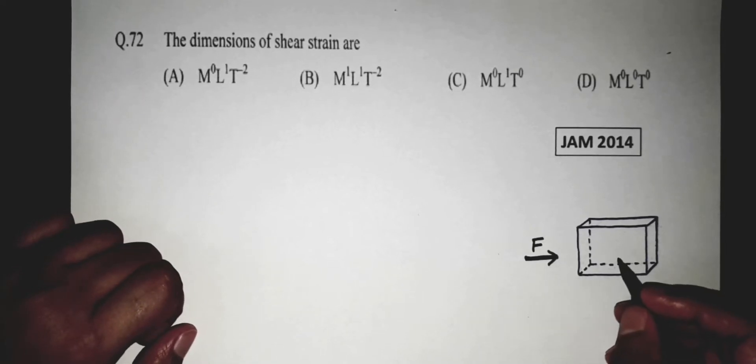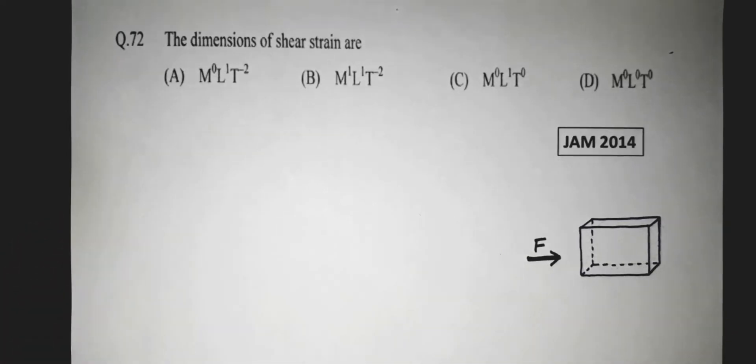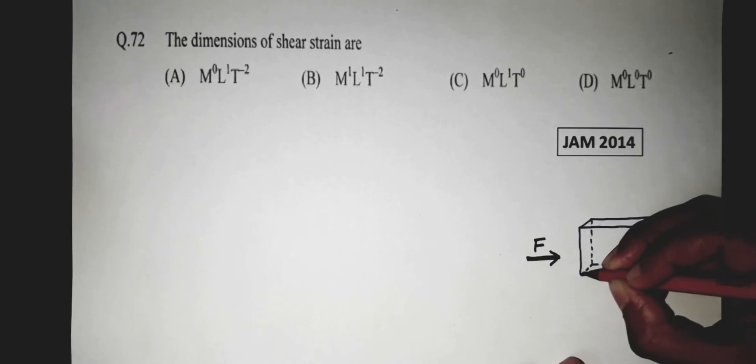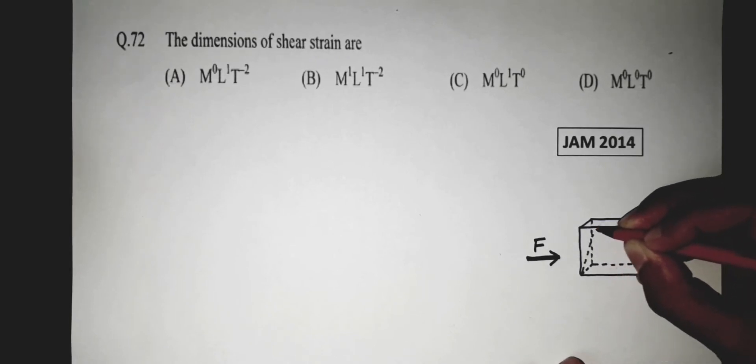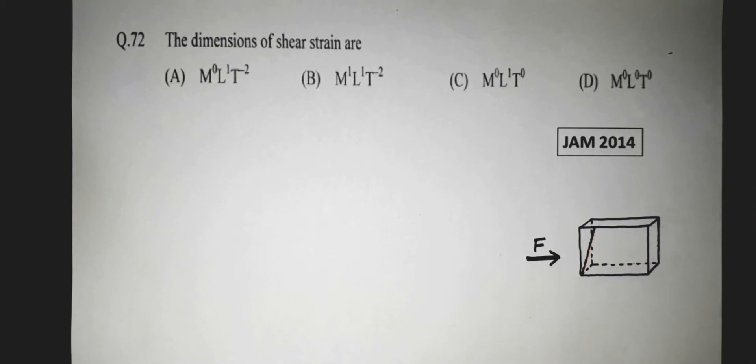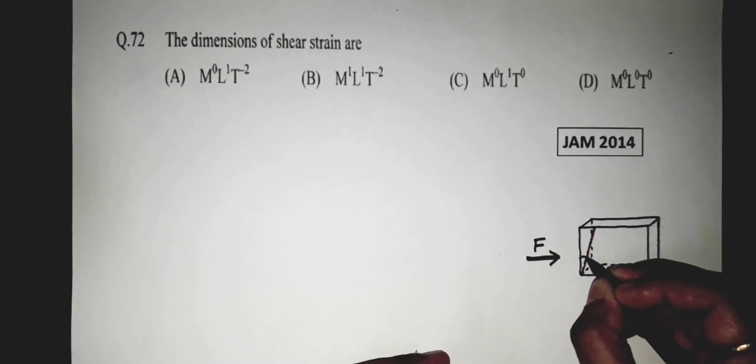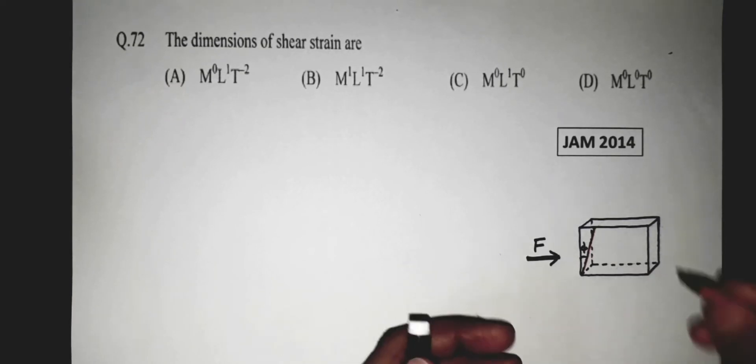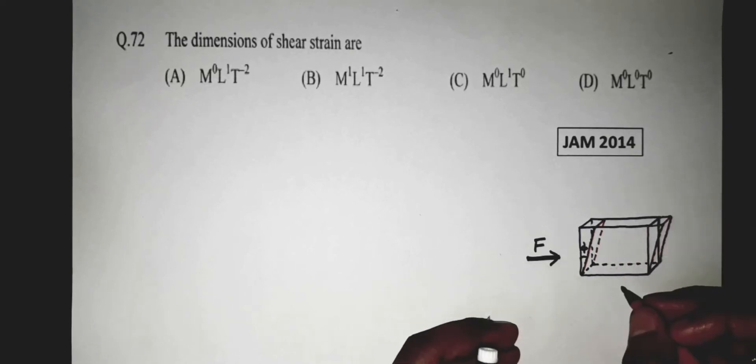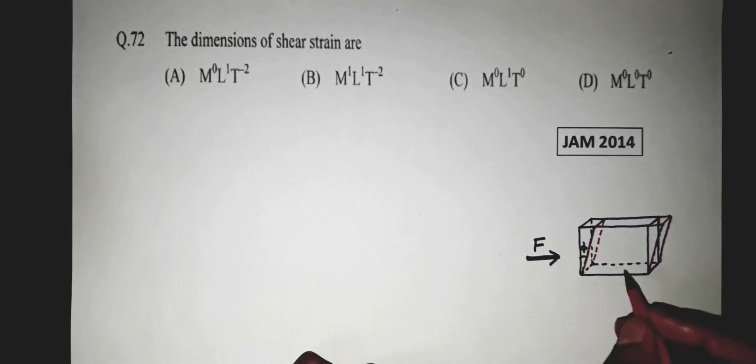So due to this force, this object is deformed to an angle. To an angle phi, suppose. This angle is phi. So after application of this force, this object becomes this, denoted by this red one.